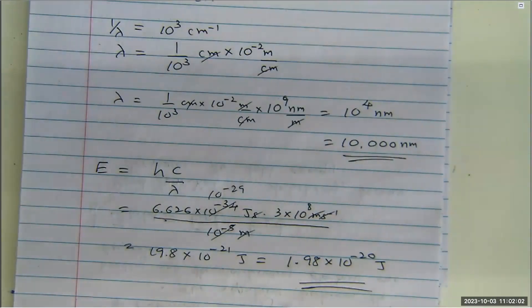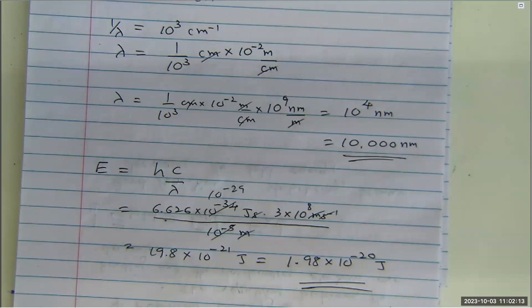This is what we did last Thursday. I'm also asking you to calculate the kilojoules per mole — that's the only additional thing. That means multiplying the energy of one photon, which is 1.98 × 10^-20 joules, by one mole of photons. In one mole of photons, we have 6.022 times 10 to the power of 23 photons.